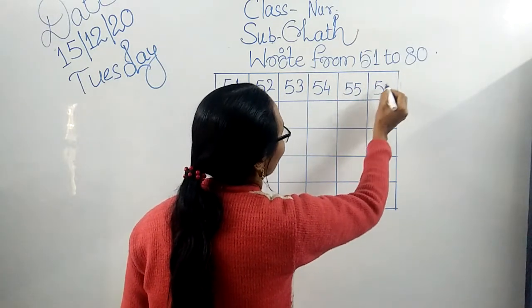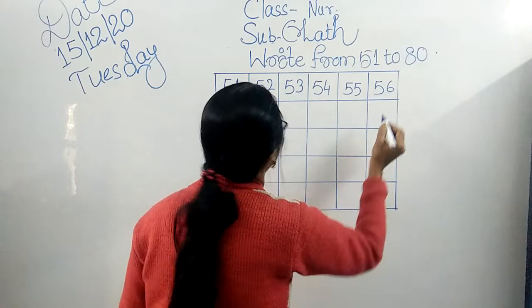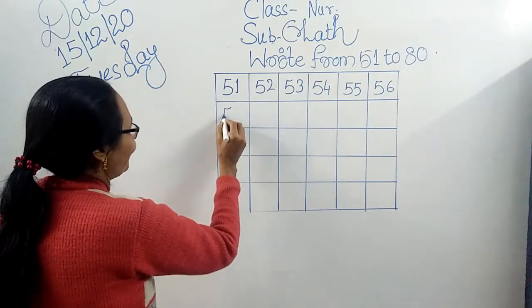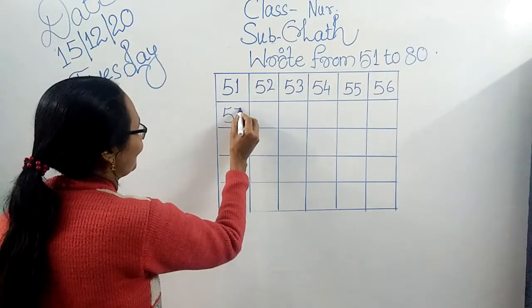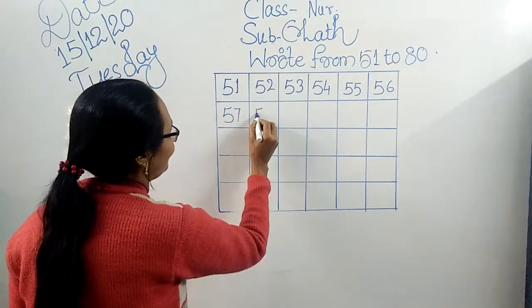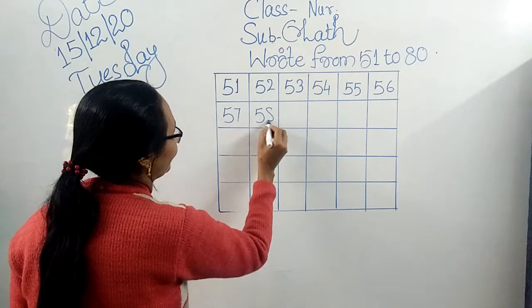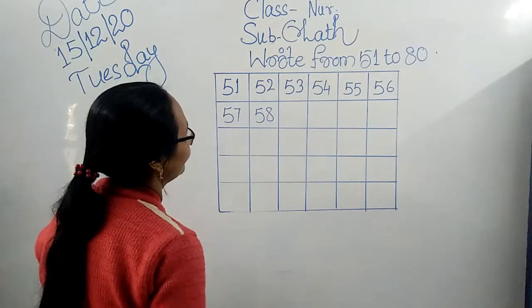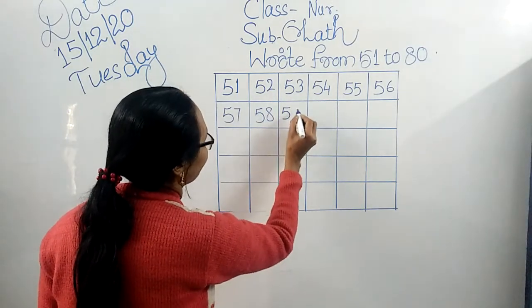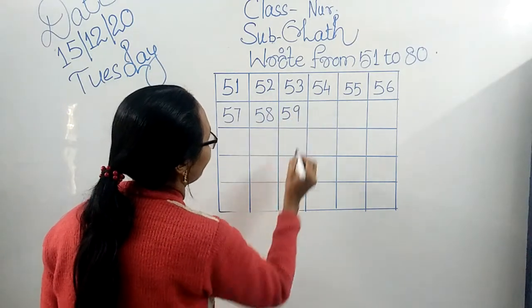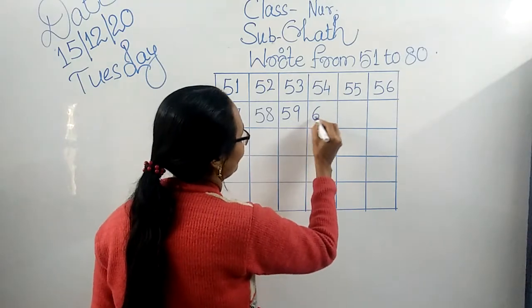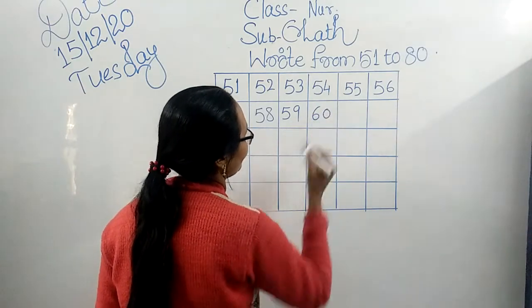5, 6 — 56. 5, 7 — 57. 5, 8 — 58. 5, 9 — 59. 6, 0 — 60.